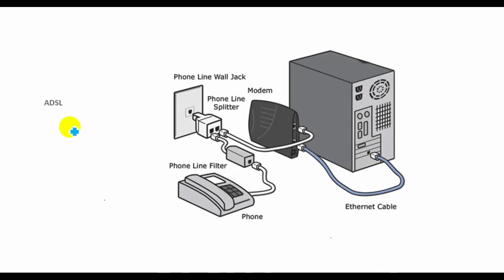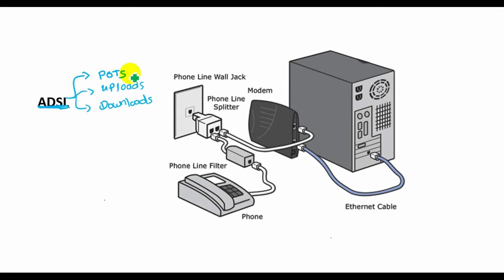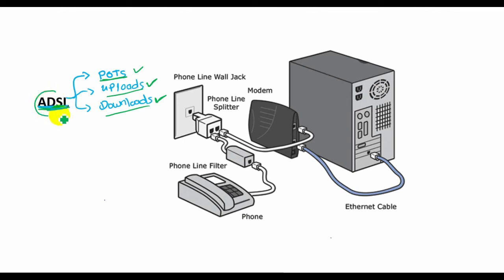Asymmetric DSL, probably the most common of the DSL varieties, uses different channels on the line. One channel is used for POTS and is responsible for analog traffic. The second channel provides upload access and the third channel is used for downloads. With ADSL, downloads are faster than uploads, which is why it is called asymmetric DSL.